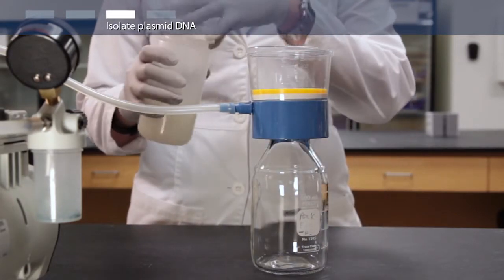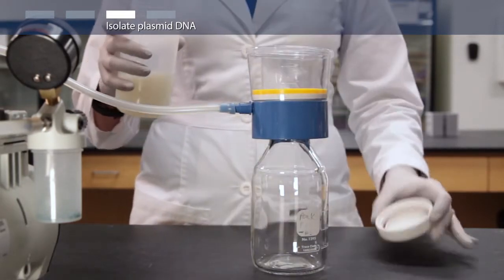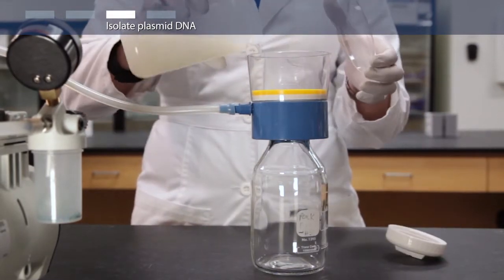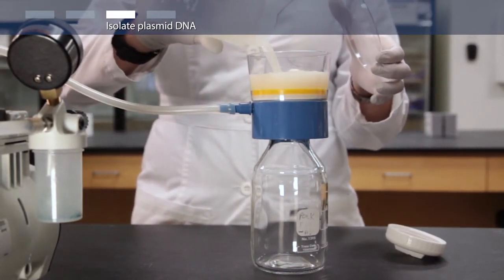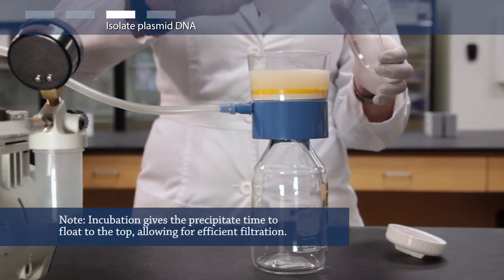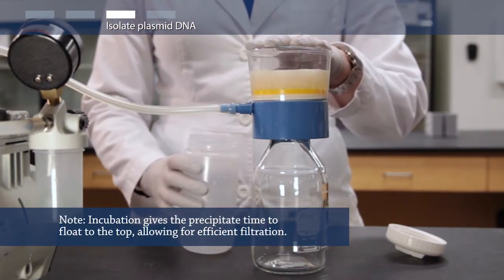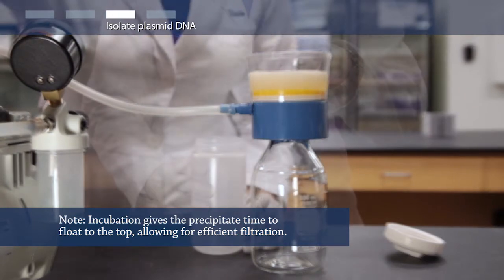To isolate your plasmid DNA, first pour the lysate into the lysate filtration cartridge which is already attached to a receiver flask and a vacuum source. Incubate for at least two minutes and then turn on the vacuum to filter the lysate.